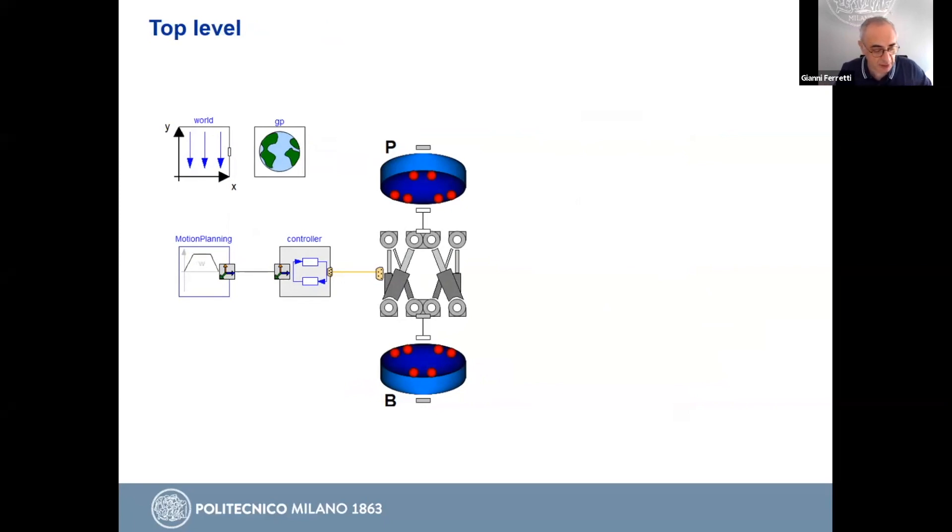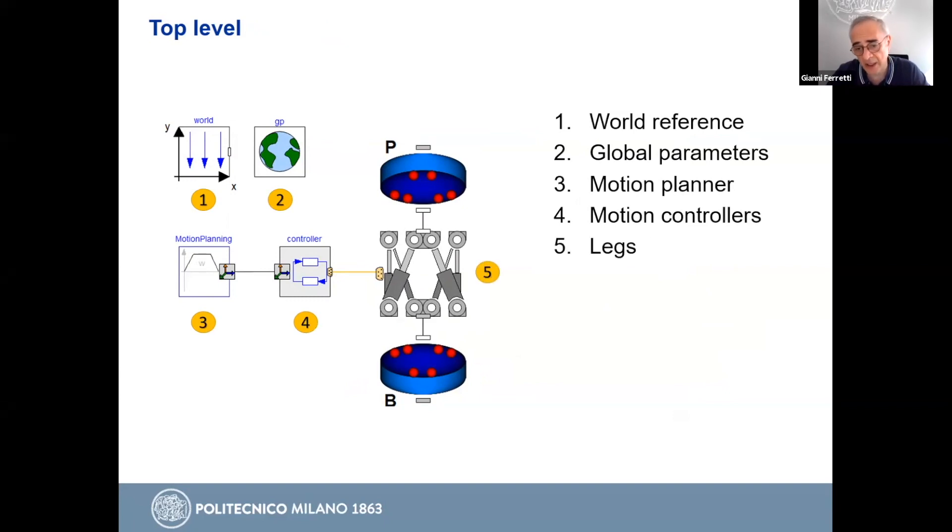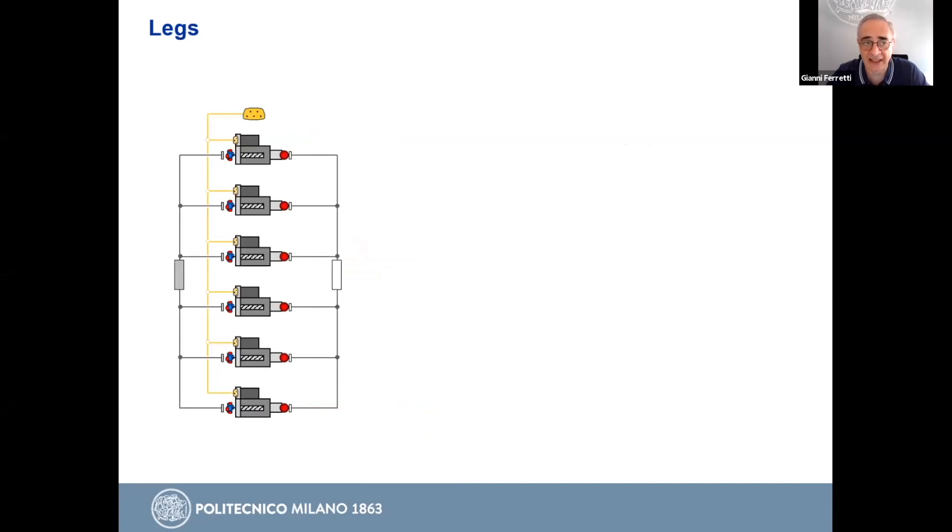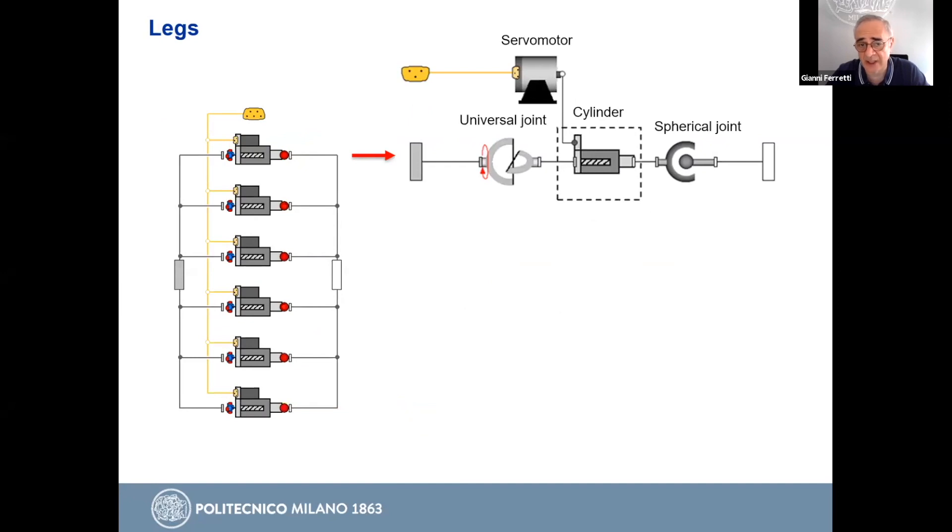Exactly the same hierarchical structure used for the Delta robot has been applied. So here again, we have the world reference, the global parameters, the motion planner, the motion controllers, and the mechanical structure made up by legs and the two platforms. Again, the connection of the servo motors to the controllers has been performed through an expandable connector. In this case, here we have six identical legs. In this case, legs are made by prismatic joints. So we have here again, a servo motor and a universal joint connecting the leg to the fixed platform and a spherical joint connecting the leg to the moving platform.